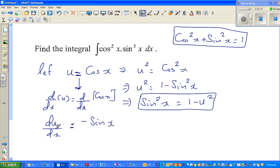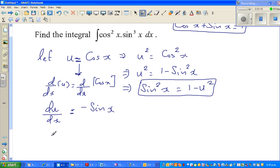So if you multiply both sides by dx, du equals minus sine x dx. But I can see a sine x dx here. So if you multiply both sides by negative 1, minus du is sine x dx.